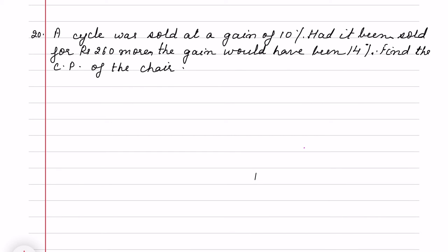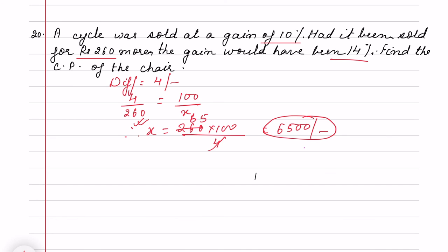Now in question 20, a cycle - the difference is given. We have a gain of 10% and 14%, so very quickly we find out the difference is 4 rupees. So it is 4 divided by 100 equals 260 divided by x. X is 260 times 100 divided by 4, which is 6500. This will be the cost price.